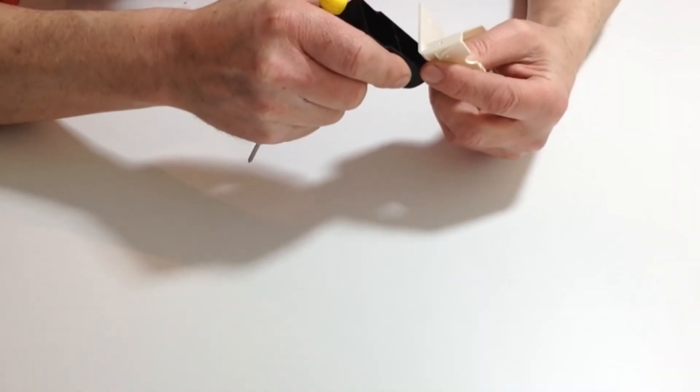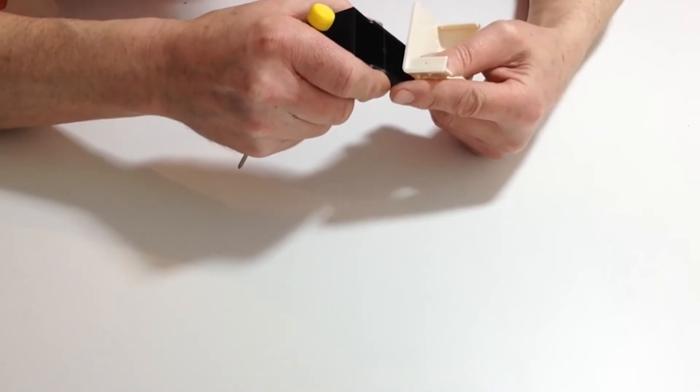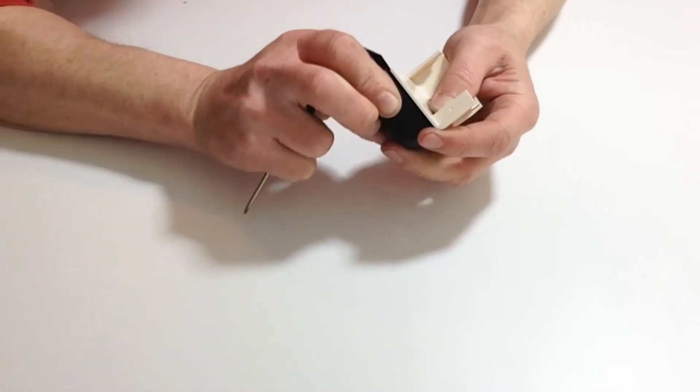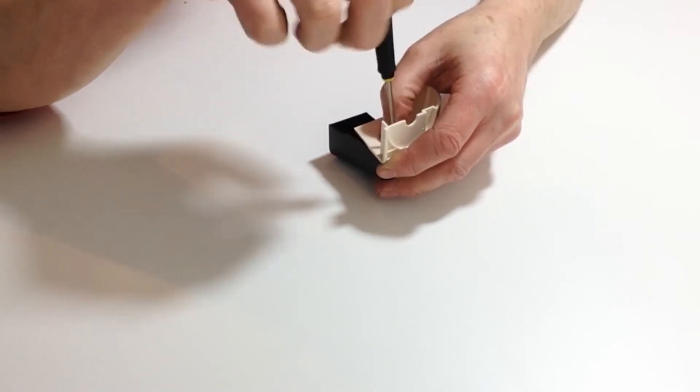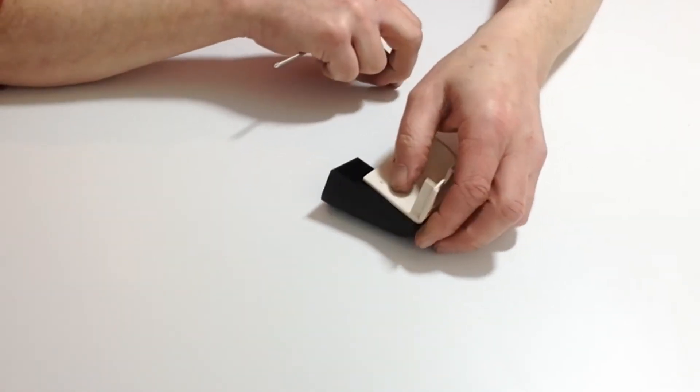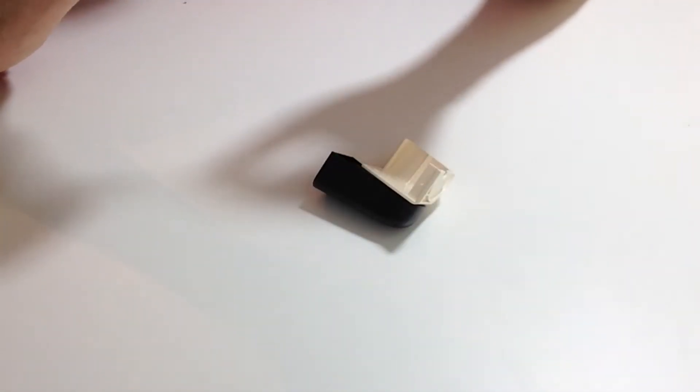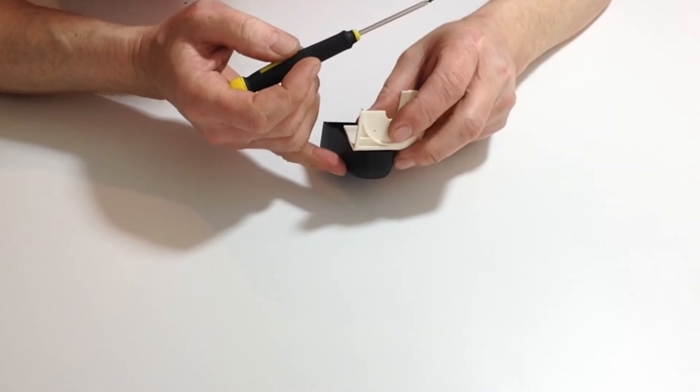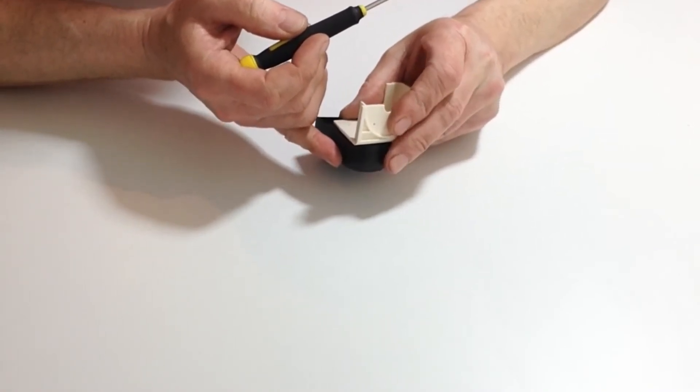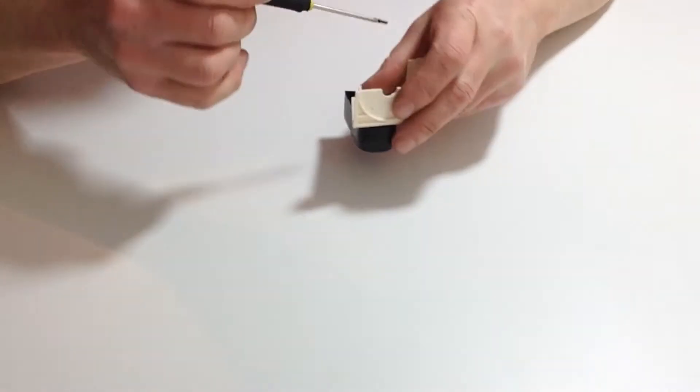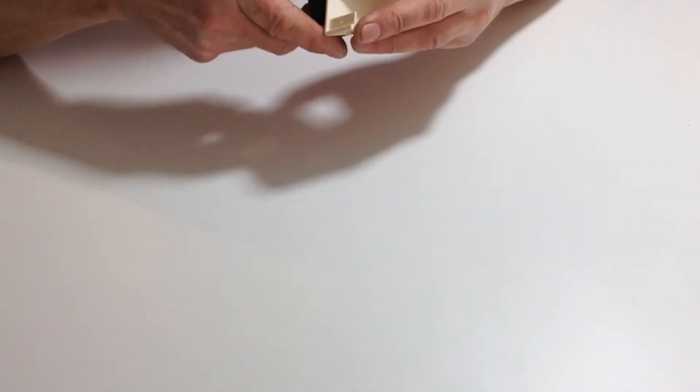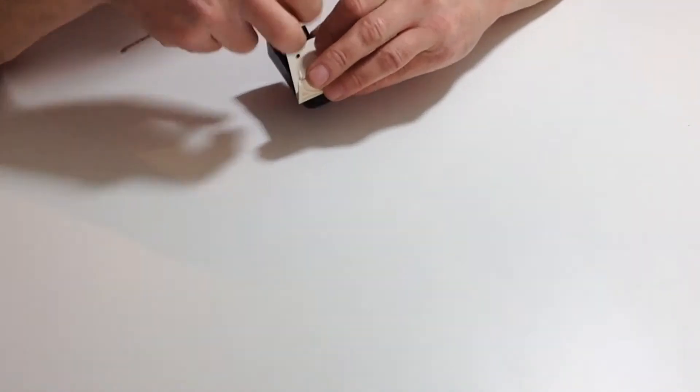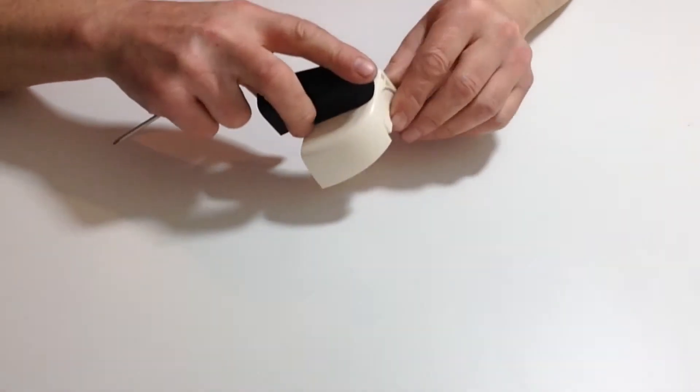Line the holes up like so and then just gently tighten that one down. Then take in the other screw, do exactly the same, lining up the hole once again, tightening that one down like so. Just get that into position.